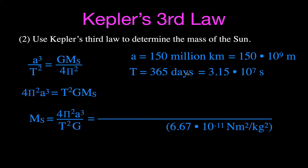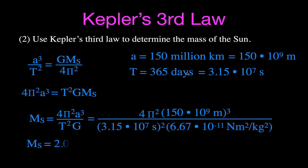Plugging in: 4π² times (1.50 × 10⁹ m)³ divided by (3.15 × 10⁷ s)² times G — don't forget to cube the semi-major axis and square the period. Doing all that math on your calculator gives the mass of the Sun as 2.0 × 10³⁰ kilograms.